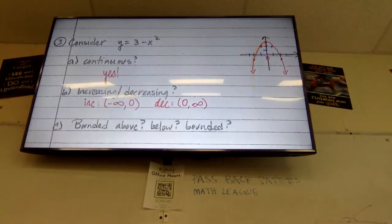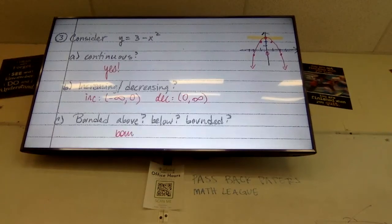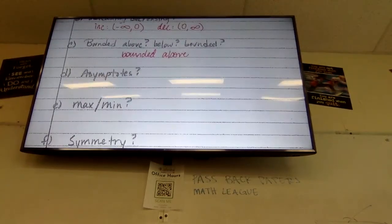Boundedness — is this bounded above, below, at all, or neither? Bounded above means there's a ceiling we never go above, or bounded below means there's a floor we can never go below. In this case, there's a bound above, so it is bounded above. Are there any asymptotes in a parabola? No.